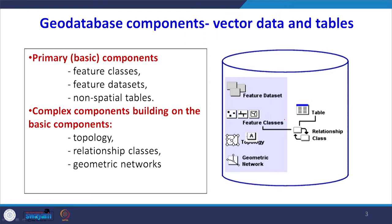When talking of vector data and tables, we have feature classes as the primary components, then feature datasets and non-spatial datasets. As learned in the previous lecture, topology is created for features — topology tells the relationship with adjacent features, contiguous features, or networking. Once we have created the tables of several spatial maps, the next task is to create relationships amongst those tables so that we can handle the tabular data: create links, make queries, store data, merge data, and split tables.